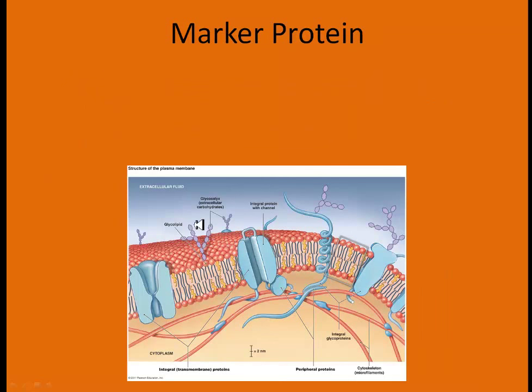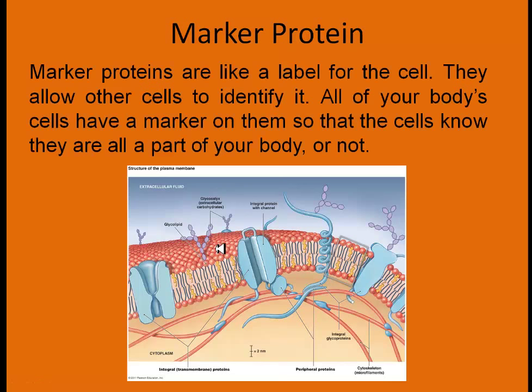Marker proteins sit on the surface — a protein with a fat sticking out of the top — and they basically identify the cell, saying 'I'm supposed to be here, I belong to you.' Marker proteins are like a label on a cell that allow other cells to identify it. All your body's cells have markers so they can be identified as part of your body. Anything that invades would not have these markers and would be identified as foreign and hunted out.